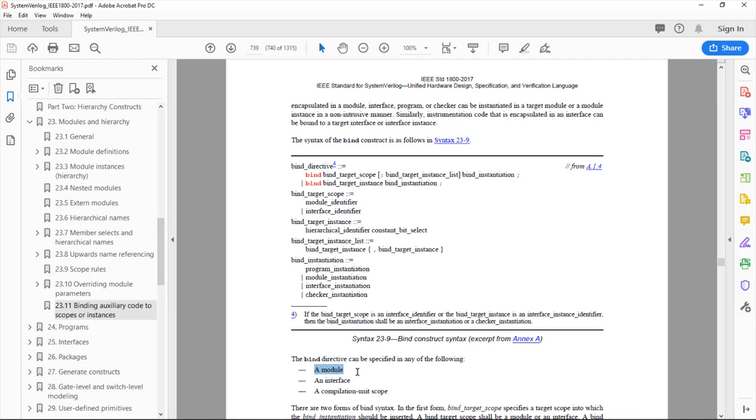You can see here the places you can specify the bind statement which are inside of a module or an interface, and this can exist as a single line in a file all by itself. That's called compilation unit scope. So you just compile that single line which contains a bind statement with the rest of your code and all the binding occurs. So let's go and look at syntax now and the principle of how it works.